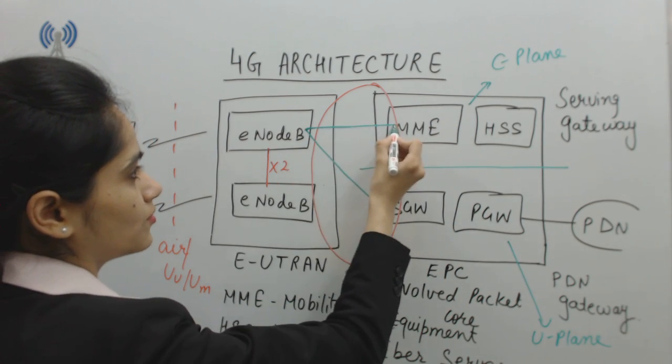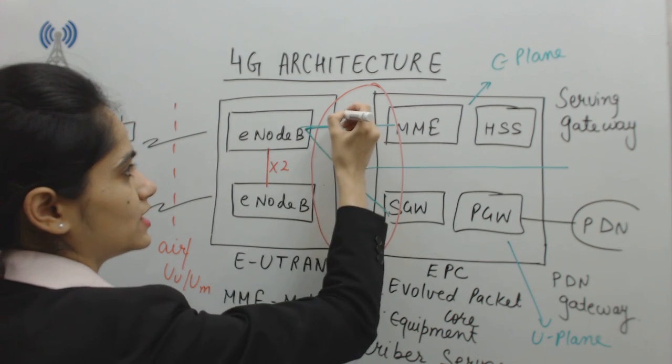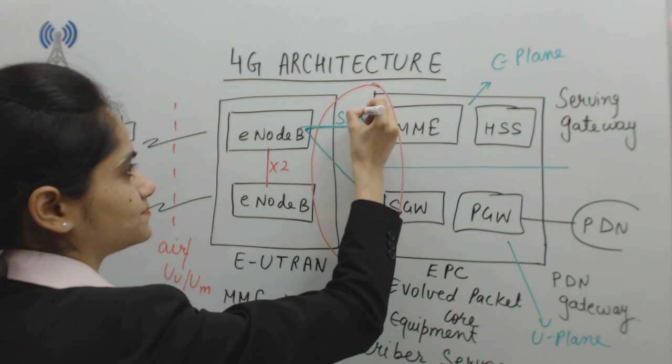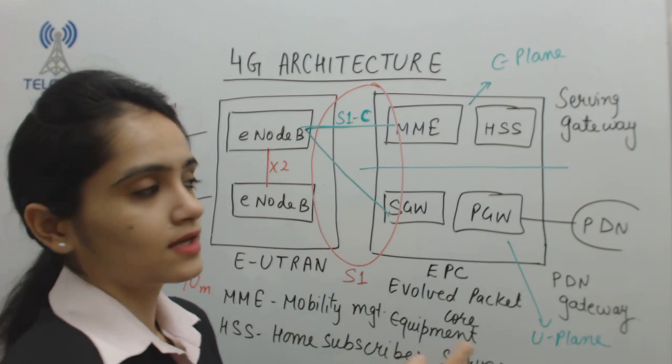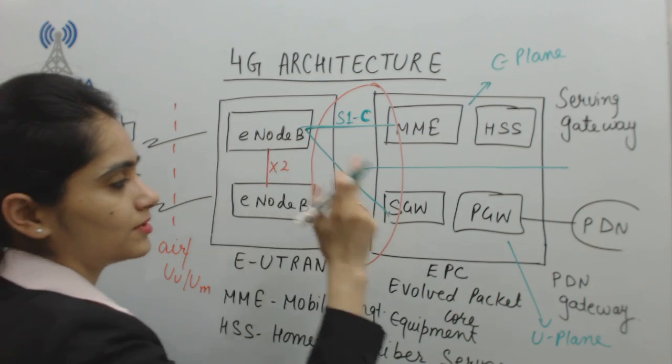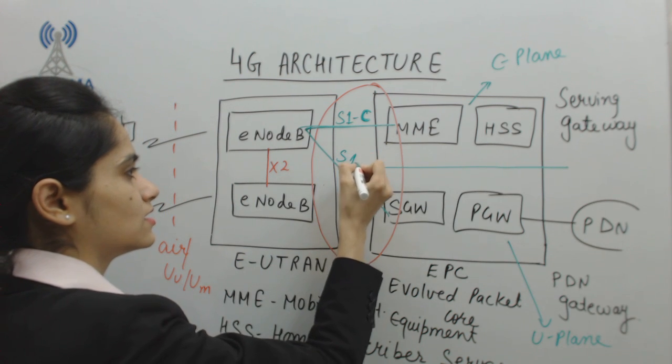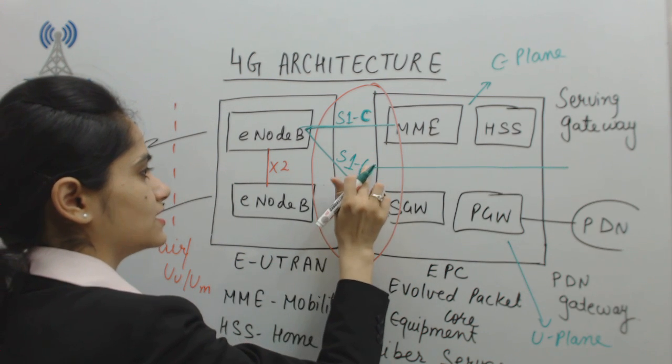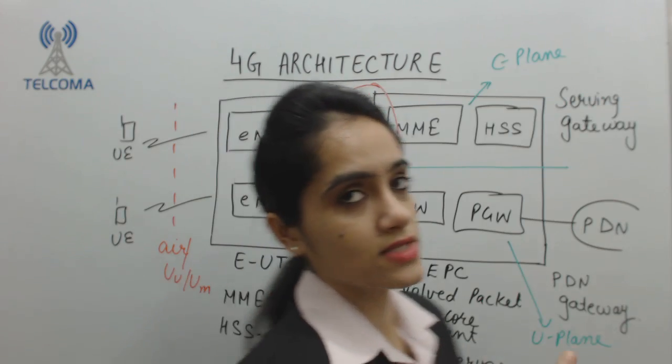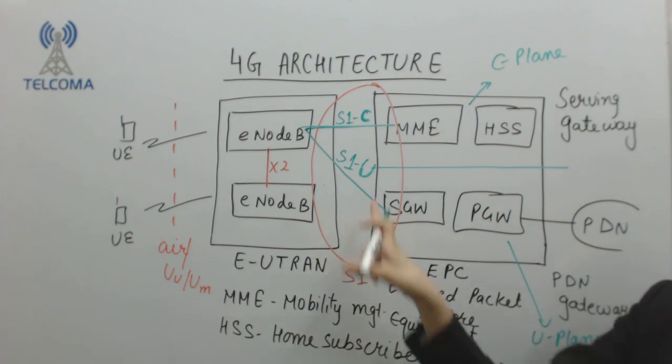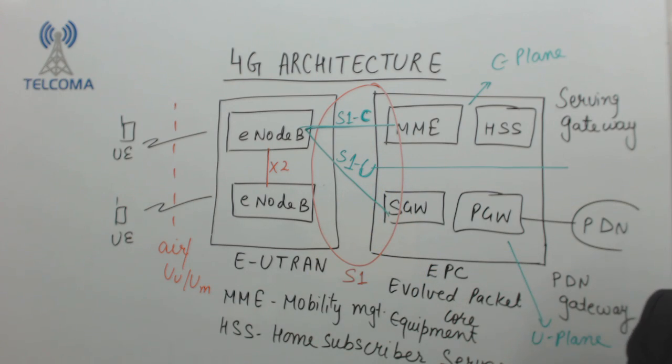The interface when ENodeB communicates with MME is named S1-C for control plane. The interface with ENodeB to the serving gateway for data is S1-U, which is user plane. So this is commonly the S1 interface, divided into S1-C and S1-U.